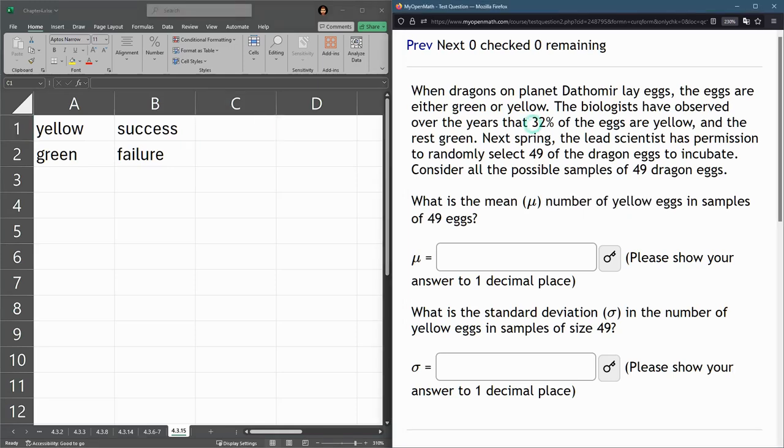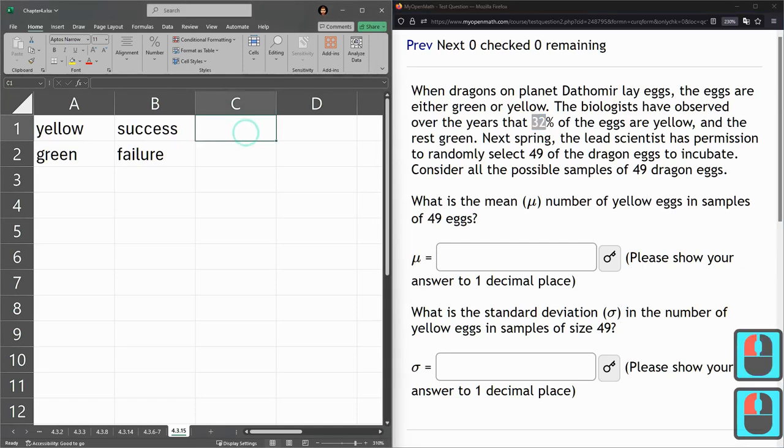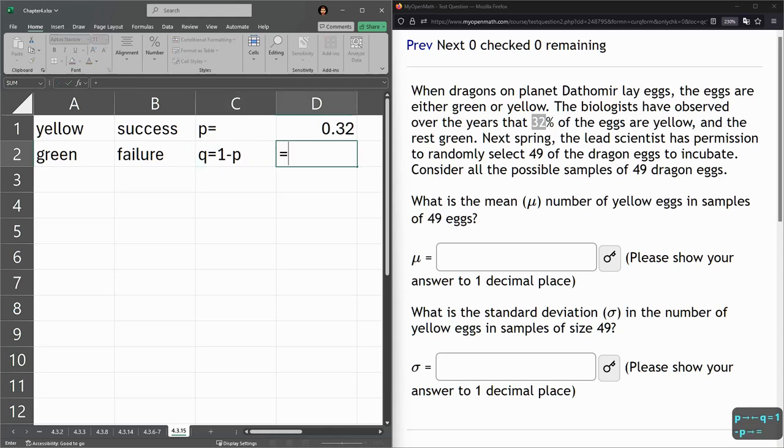Alright, they do tell us 32% of the eggs are yellow, so that's our p-value. Now 32% is 0.32. We could compute q, which is 1 minus p, 1 minus that number.